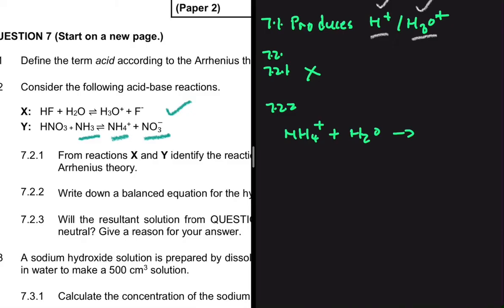Since NH4+ is an acid and donates a proton, the hydrolysis equation gives us NH4+ + H2O → NH3 + H3O+. That is our answer to 7.2.2.